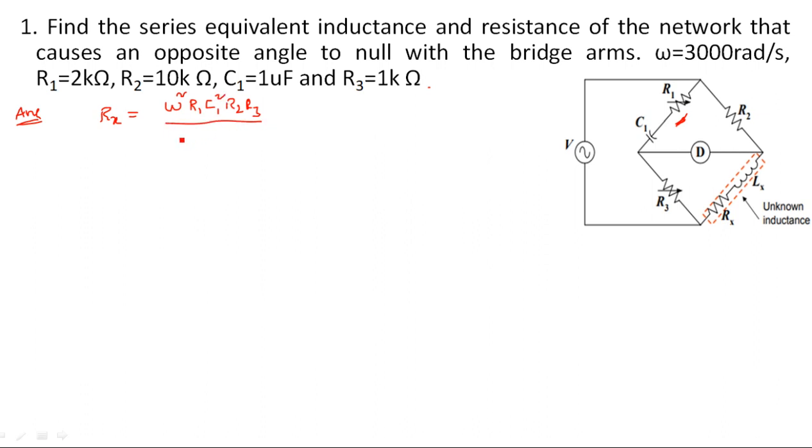The denominator part is common for both of them: omega squared R1 C1 squared, R2, R3 divided by 1 plus omega squared R1 squared C1 squared. So every value is given. Omega value is given as 3k or 3000 radians per second. So 3000 squared, whatever the value is given, just substitute: 2 kilo times C1 which is 1 microfarad, 10 power minus 6 squared, divided by R2.